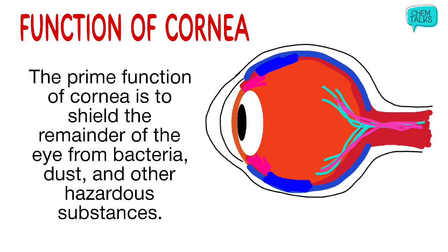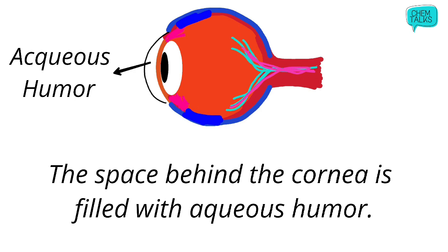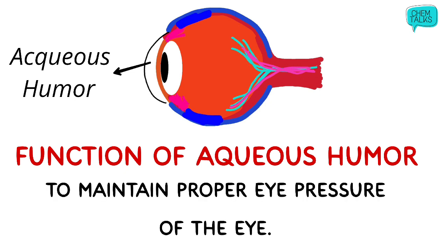The next important part of the human eye is aqueous humor. This is basically a liquid that fills the space behind the cornea. Its function is to maintain proper eye pressure, which is also a very important role.